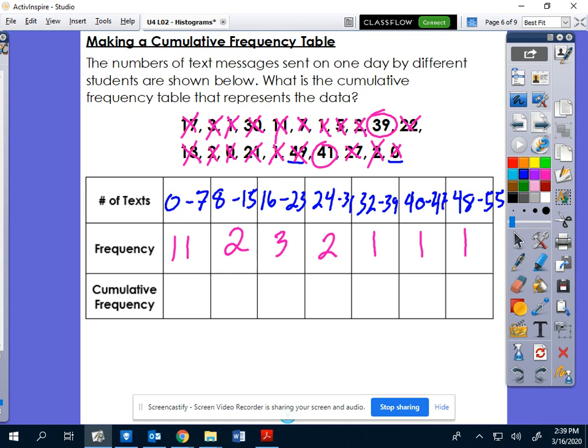Cumulative frequency is the number of text messages sent on a particular day. Cumulative frequency adds up all of the values in that interval and below that interval.